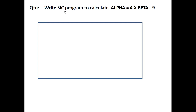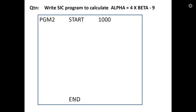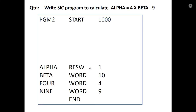The second question is: write a SIC program to calculate alpha equal to 4 into beta minus 9. Program PGM2, start 1000, end with address 1000. Variable declarations: alpha is RESW 1 to keep the result — an integer array of size 1. Beta is WORD 10. We also declare constants FOUR as WORD 4, and NIN as WORD 9.